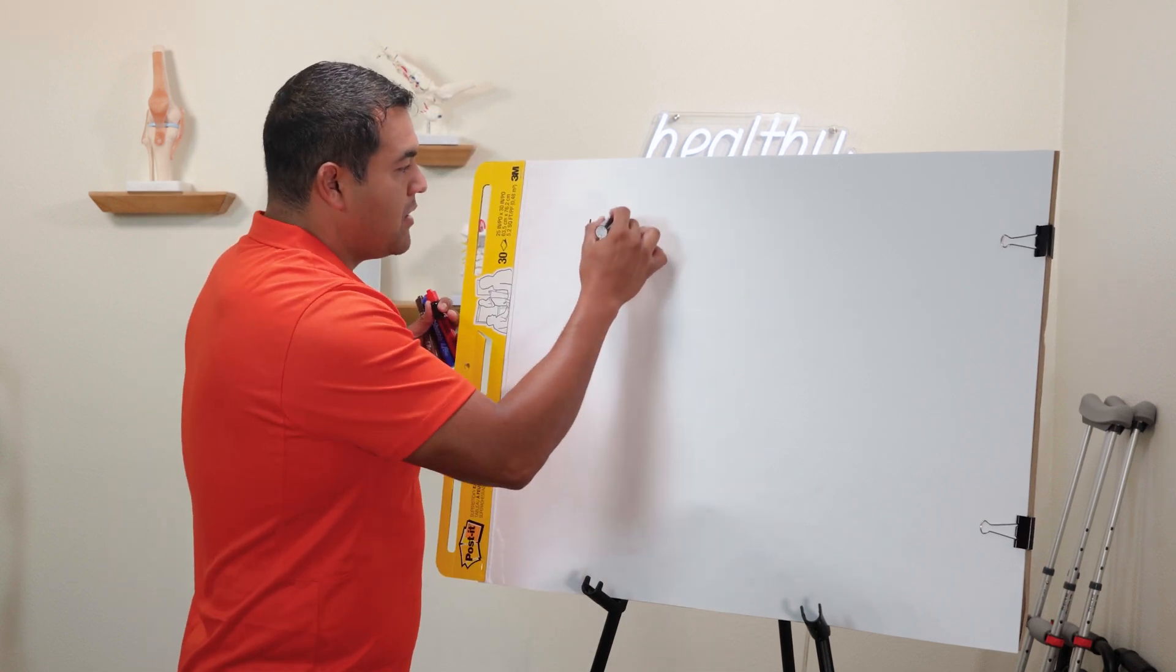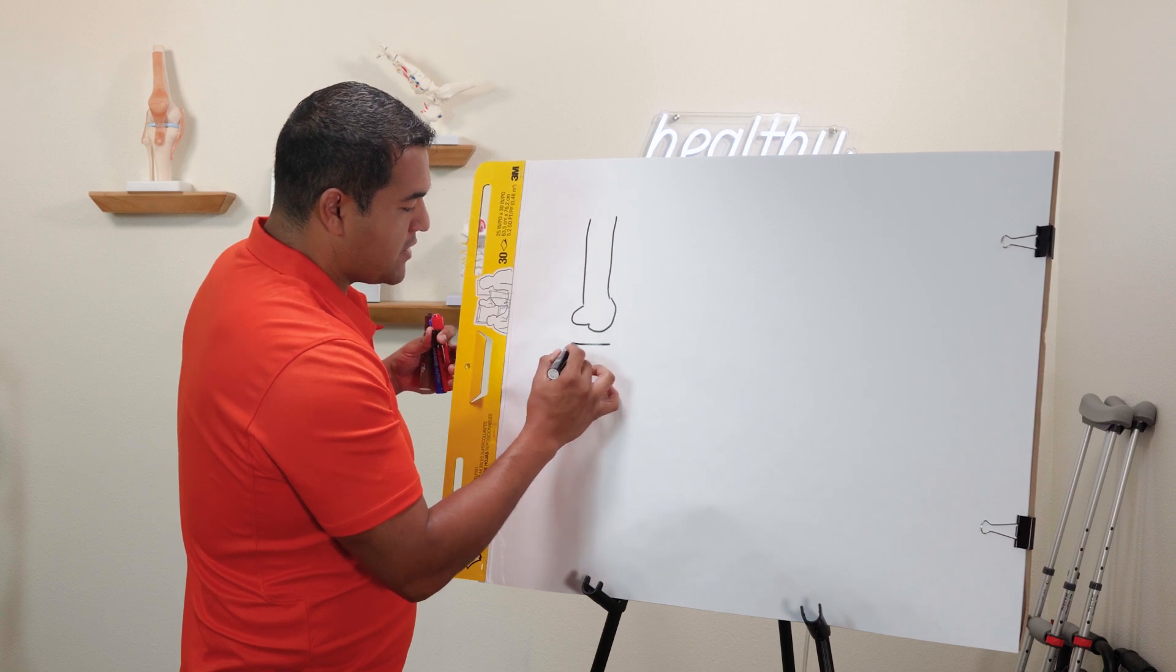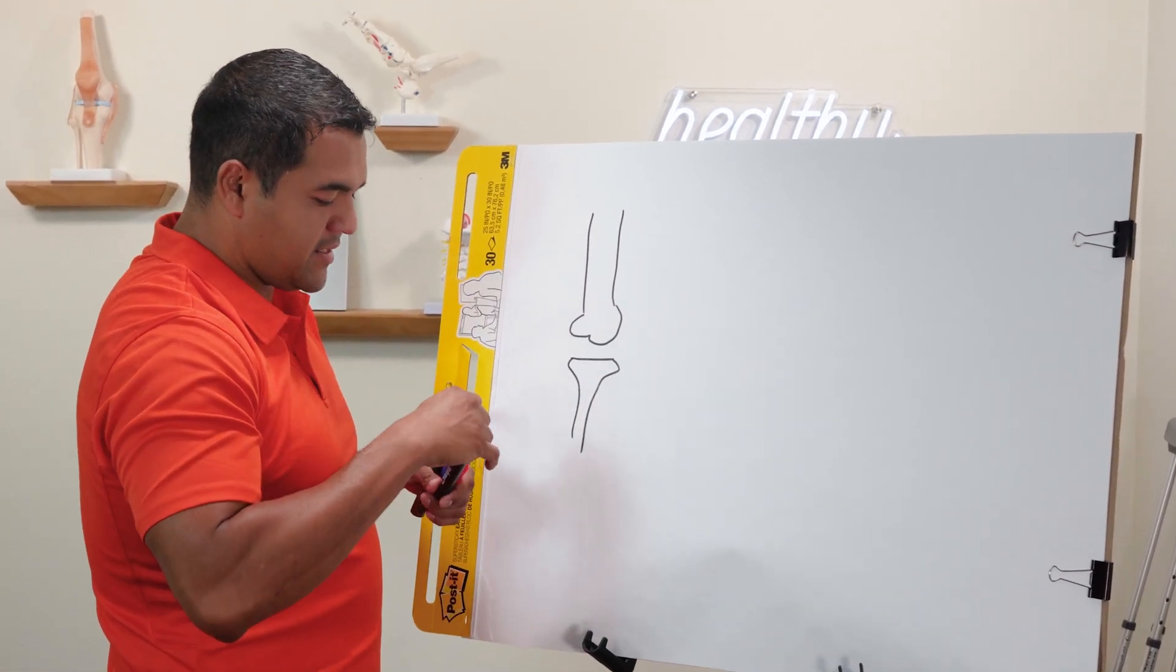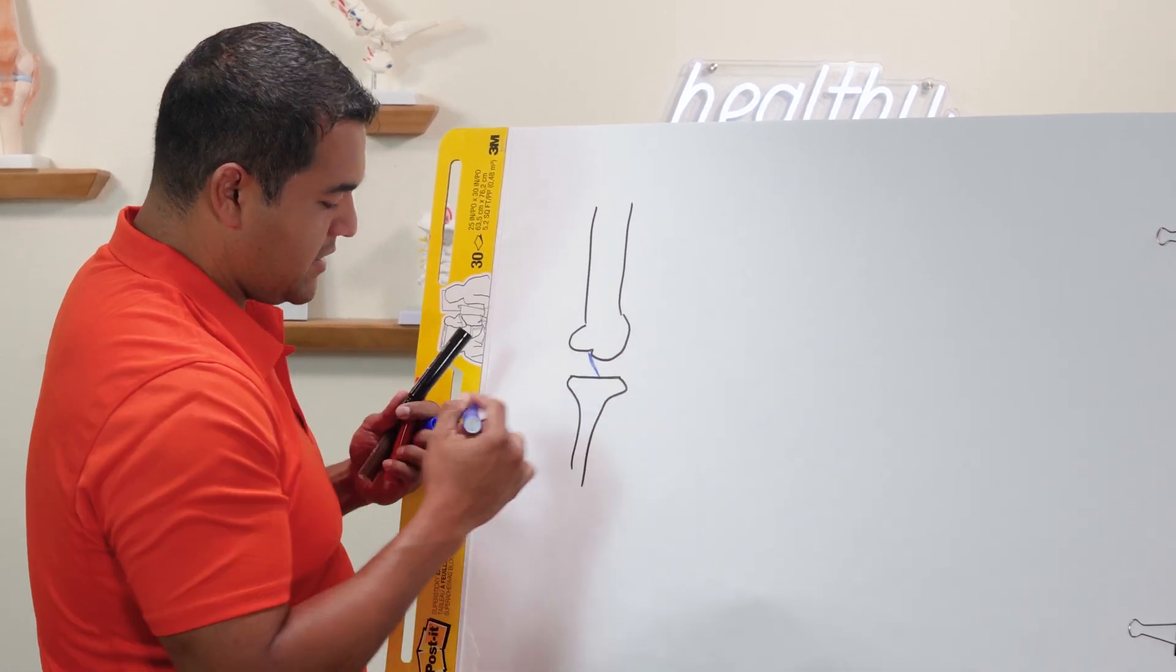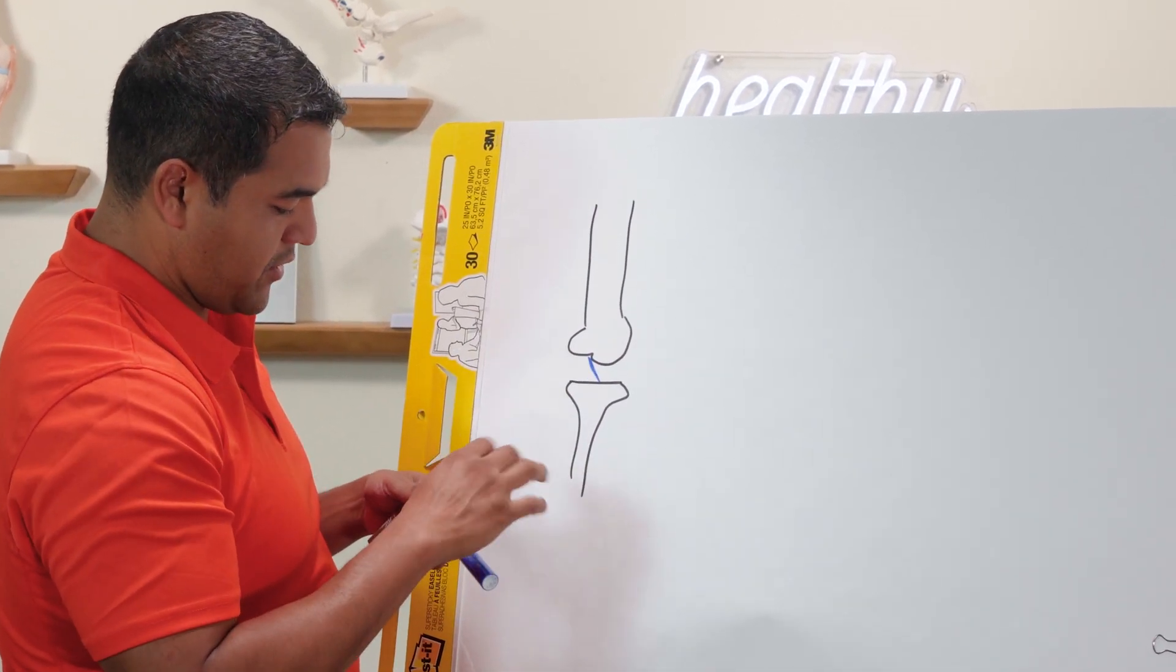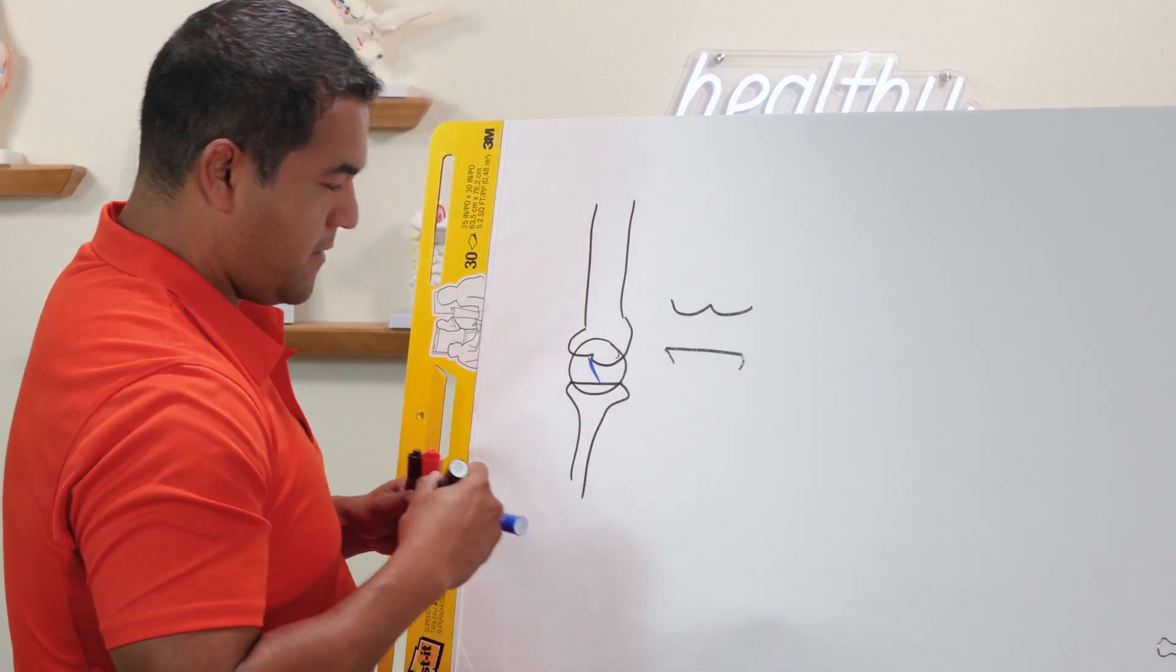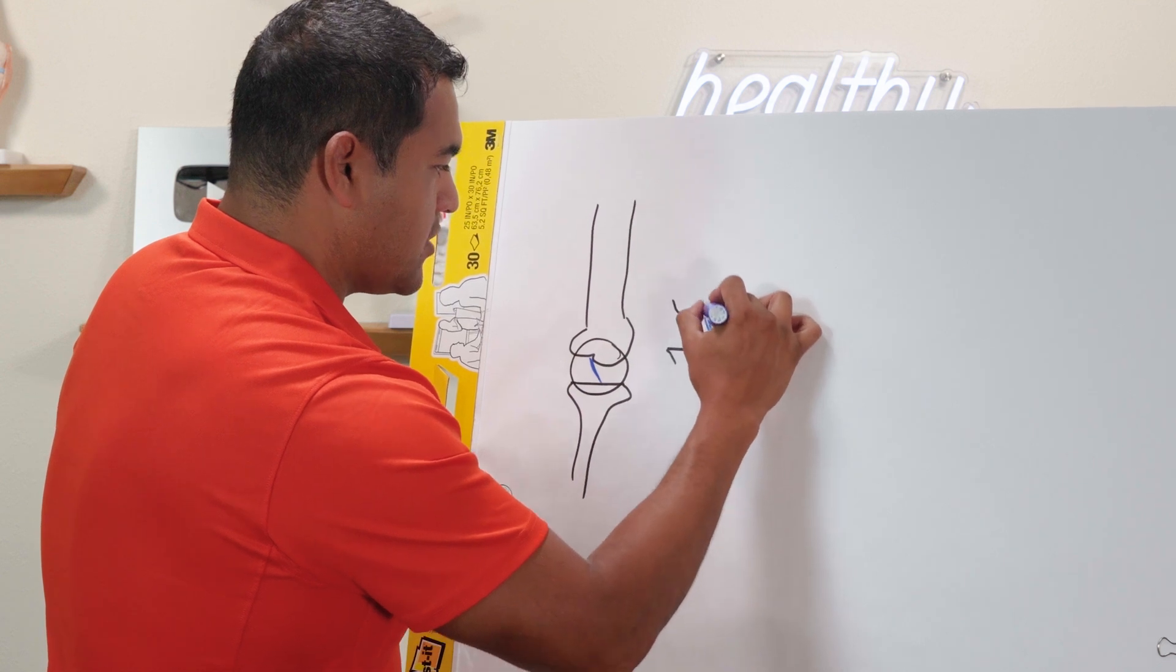Let me just show you the bones here. Here's the thigh bone and here's the shin bone below, and the ACL is right in the middle right here. So let me zoom in on that for you. There's the shin bone and here's the ACL. I'm just going to draw it a little thicker.